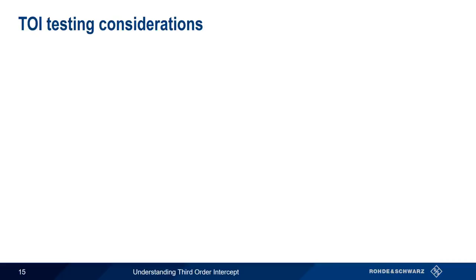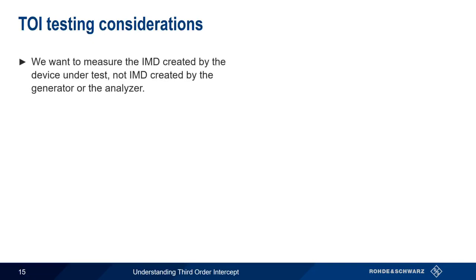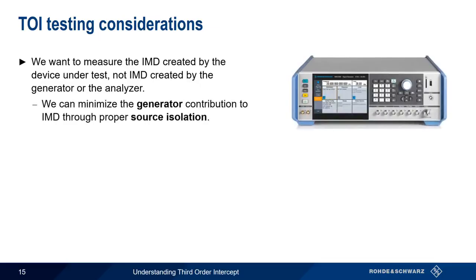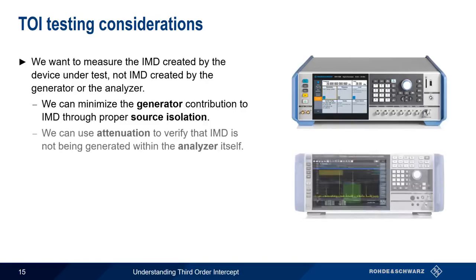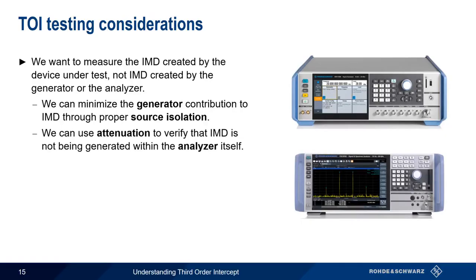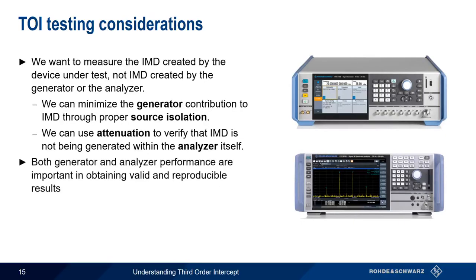Third-order intercept is a very simple measurement, but there are a few things we need to take into consideration when we make third-order intercept measurements. First, we need to be sure that we're measuring the intermodulation distortion generated by the device under test, not IMD generated by the signal generator or by the analyzer. There are two ways we can do this: we can minimize the generator contribution to IMD using something called source isolation, and we can use attenuation to check whether the IMD is being generated within the analyzer itself. Instruments with good performance are necessary to get valid and reproducible results.